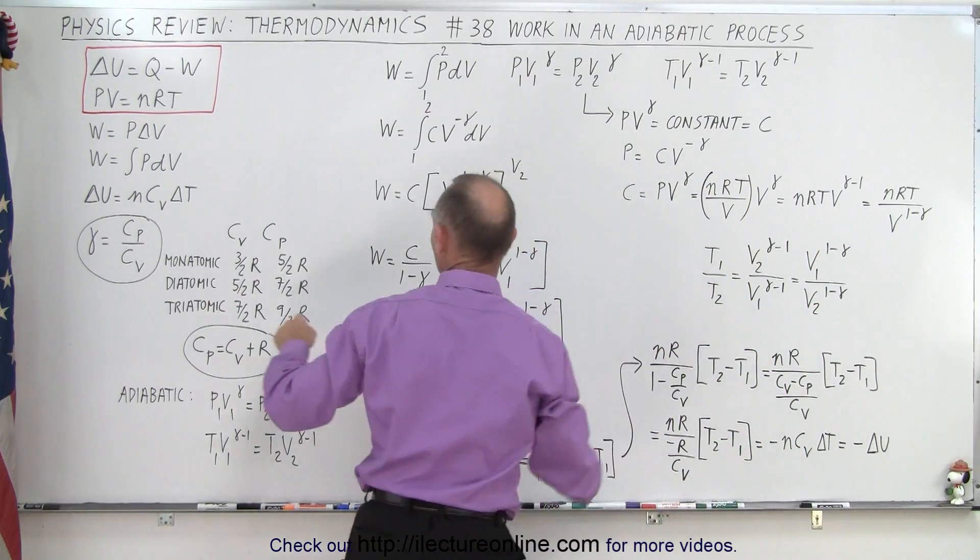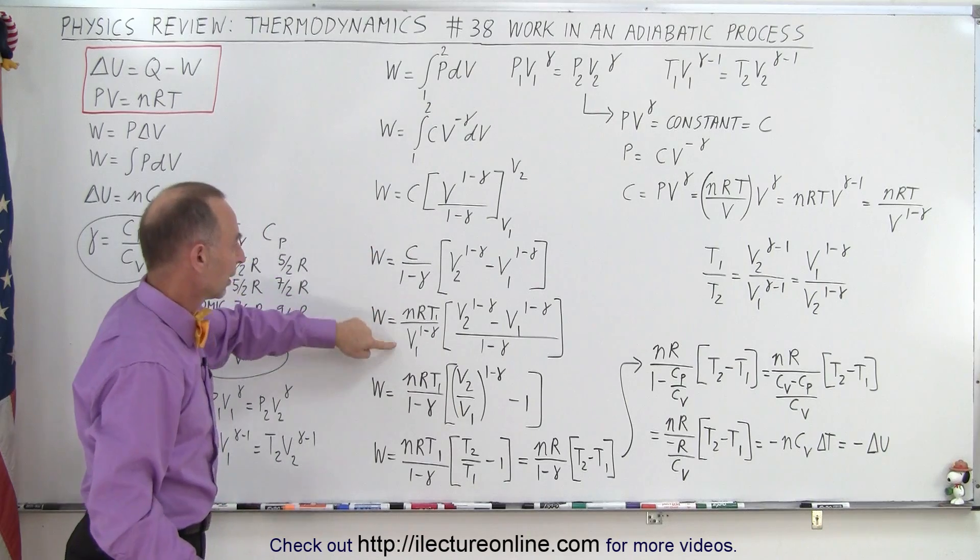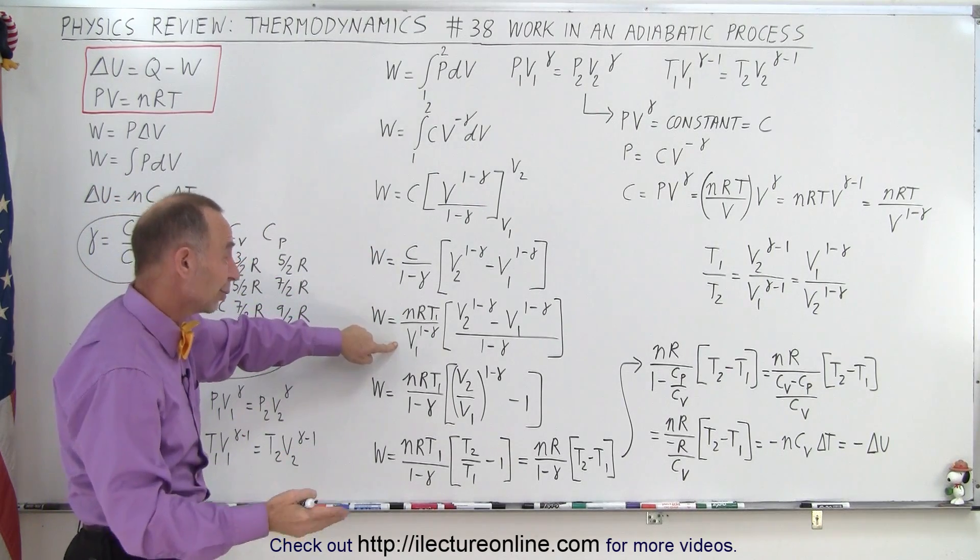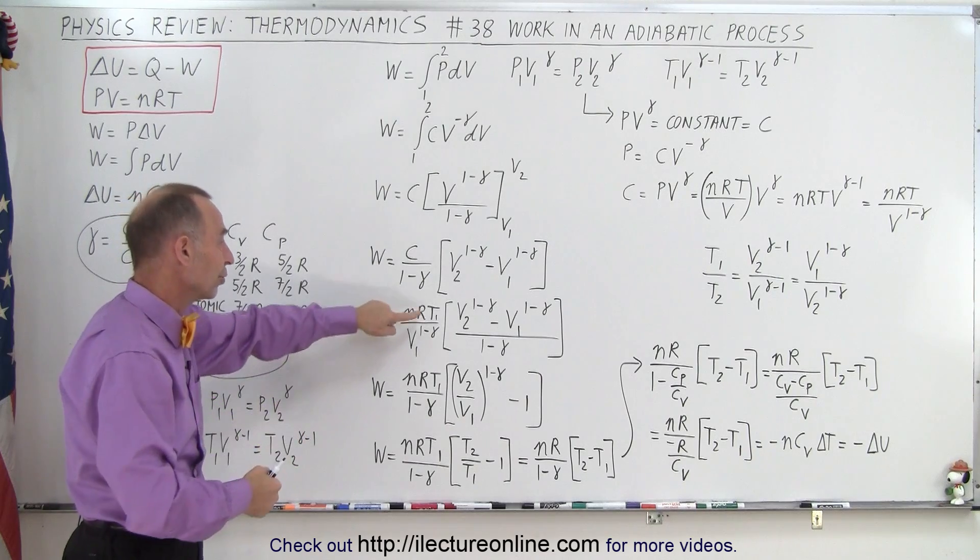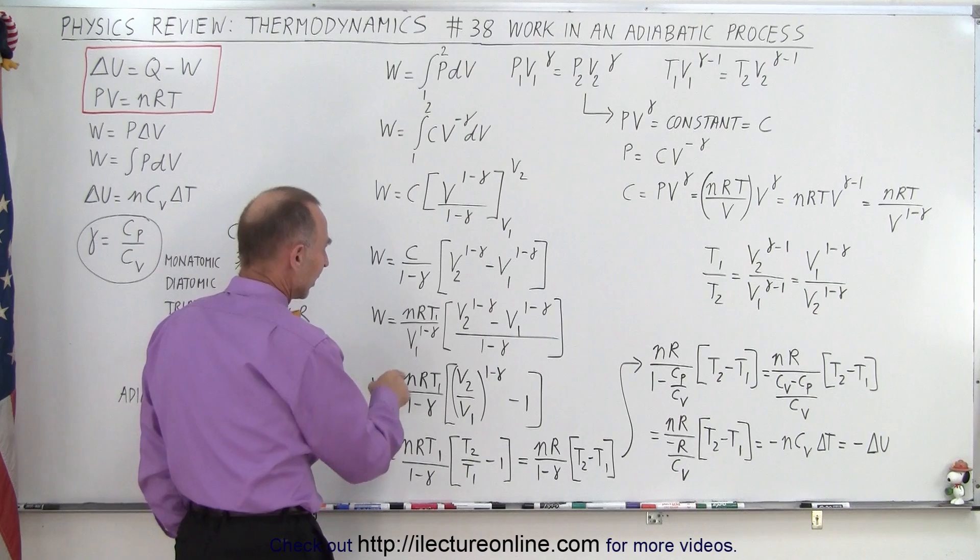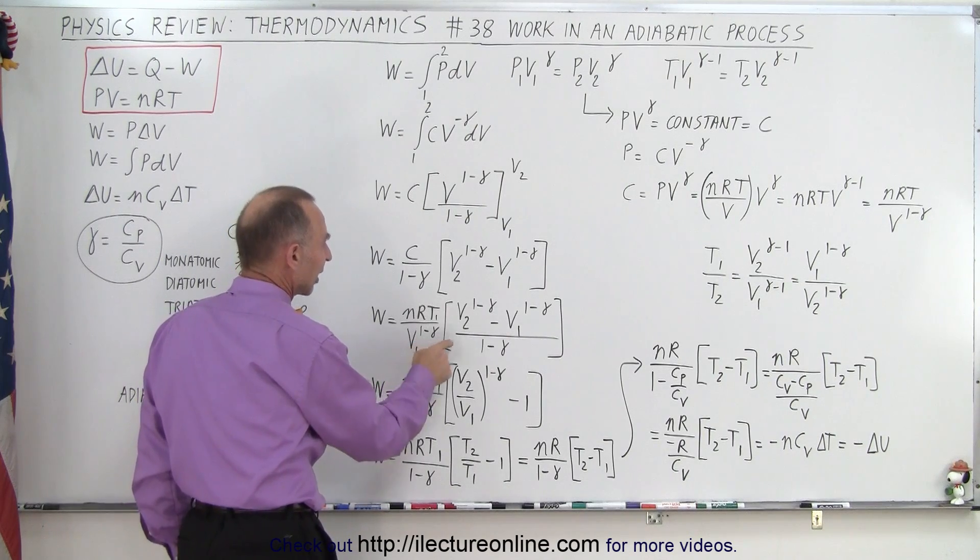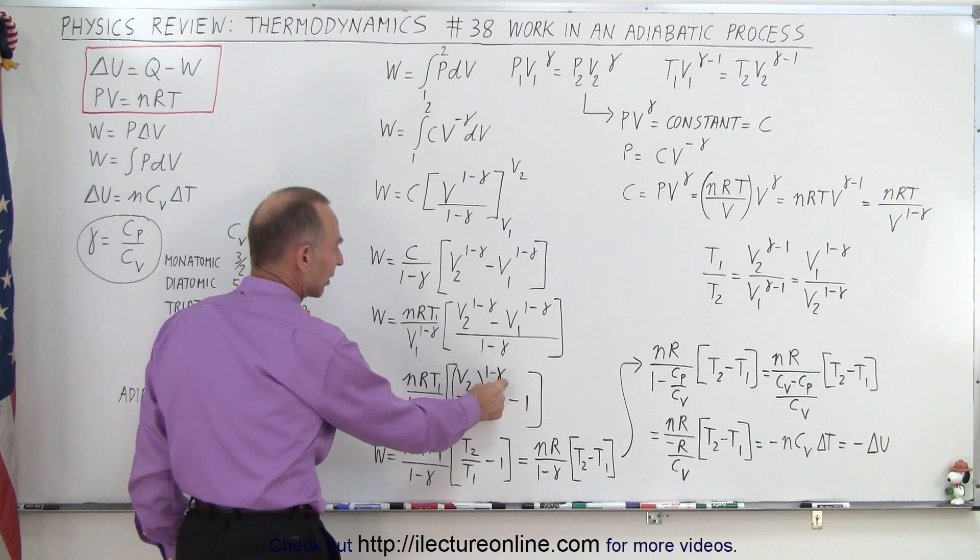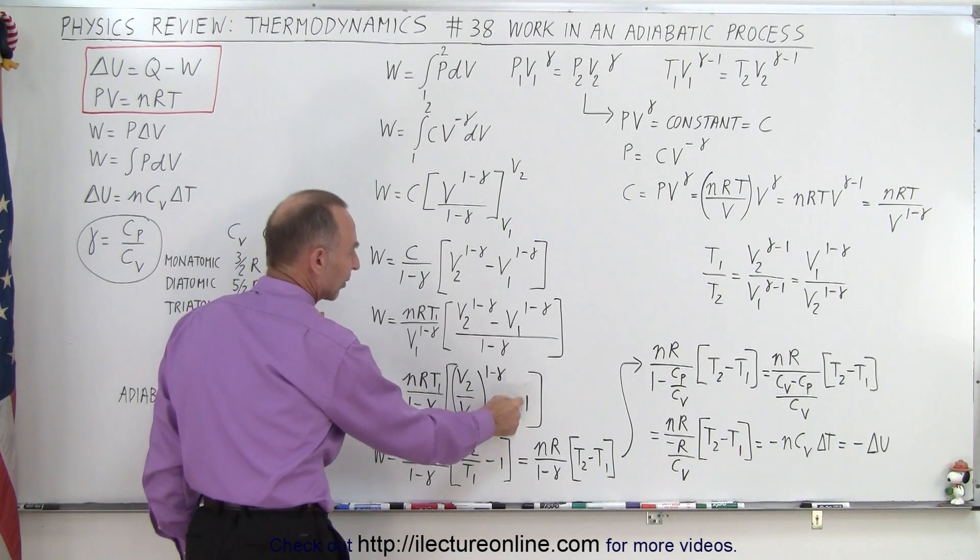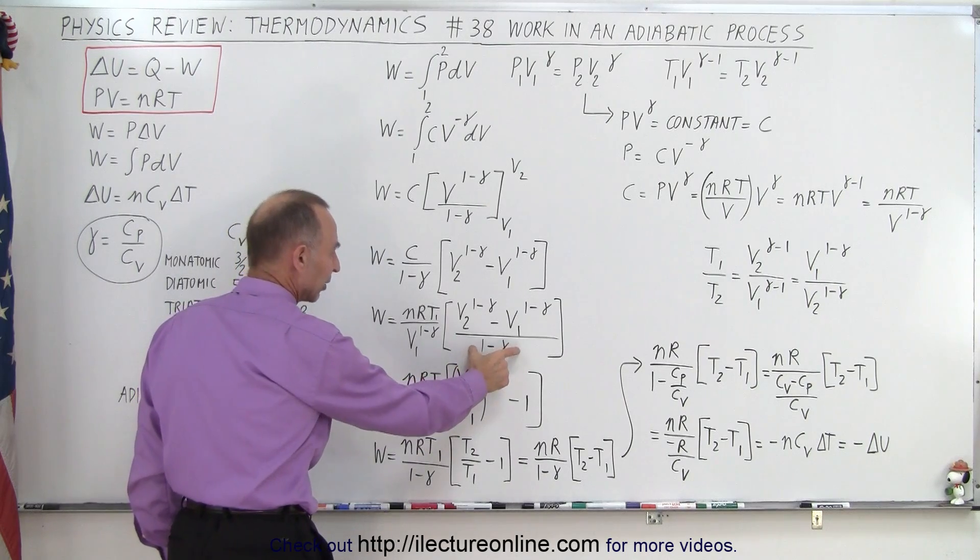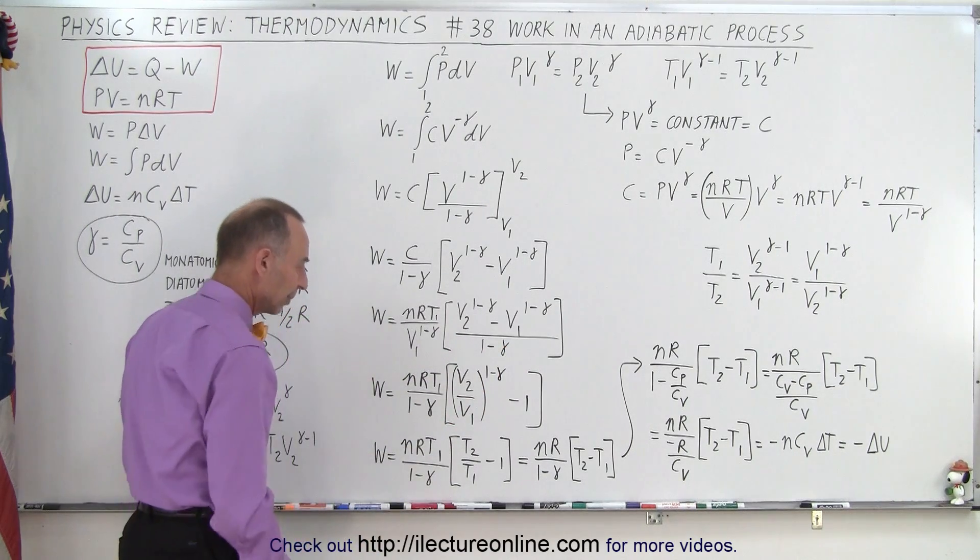So now we can replace C by what C is equal to, and we can do it in terms of T1 and V1. We could do it in T2, V2, but we chose to do T1, V1. And then notice if I divide V1 to the 1 minus gamma into this, I end up with V2 over V1 to the 1 minus gamma, and this becomes a minus 1. We still have the denominator 1 minus gamma, which I ended up placing over there.